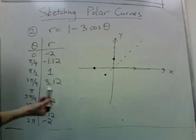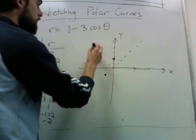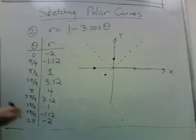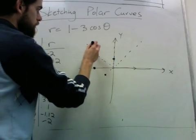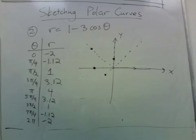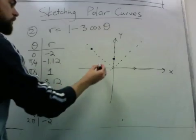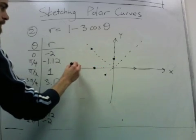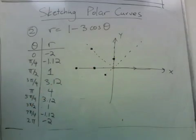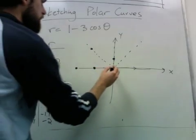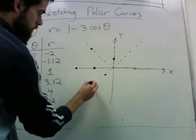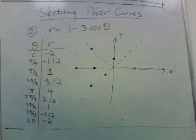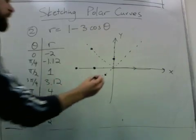When we're at 3 pi over 4, we have 3.12. When we have pi, we get 4. When we have 5 pi over 4, we get 3.12. When we have 3 pi over 2, we get 1.